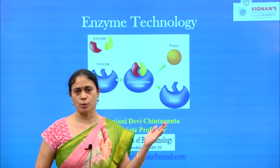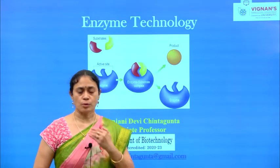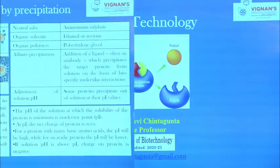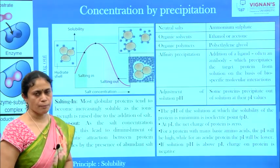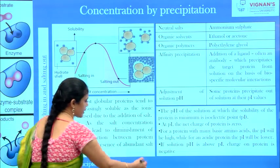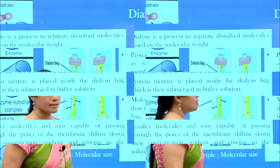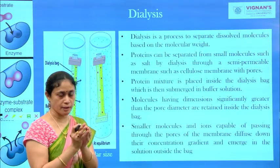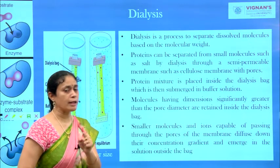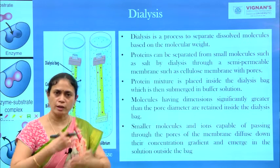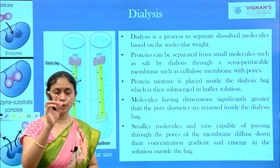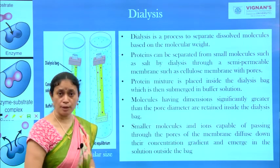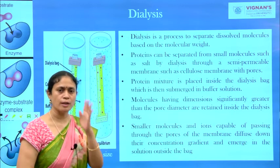We are going through the syllabus included under Unit 2 on enzyme technology. After completion of the precipitation technique, we are moving towards another technique which is dialysis. After protein precipitation, you got your protein precipitated, but along with your protein there will be a certain amount of salt. In order to go for further purification methods, you need to separate your salt from the protein. Dialysis can be used to separate salts from the protein.